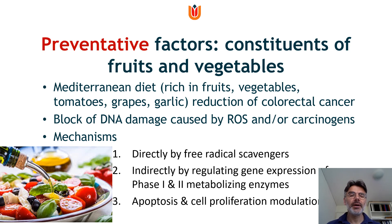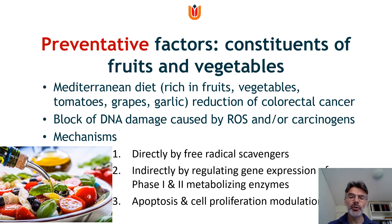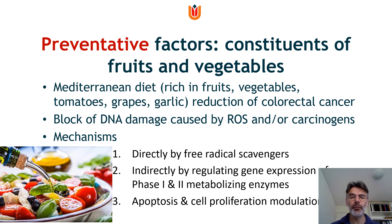Now we come to the preventative factors, such as the constituents of fruits and vegetables. The Mediterranean diet, rich in fruits and vegetables, tomatoes, grapes and garlic, is related to a lower level of colorectal cancer. DNA damage caused by reactive oxygen species and carcinogens may be blocked by three mechanisms: directly by free radical scavengers, indirectly by regulating gene expression of phase 1 and phase 2 metabolizing enzymes, and by apoptosis and cell proliferation modulation.